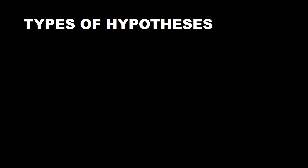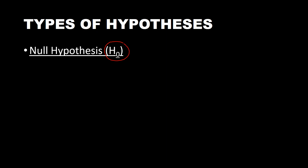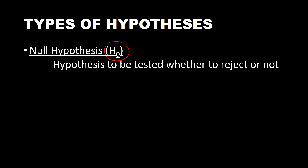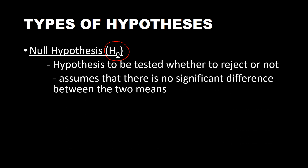Hypothesis has two types. The first is the null hypothesis, with symbol H sub zero. This is what we are trying to test — whether the statement can be accepted or rejected. The null hypothesis assumes there is no significant difference between the two means, meaning the population mean and the sample mean are the same.